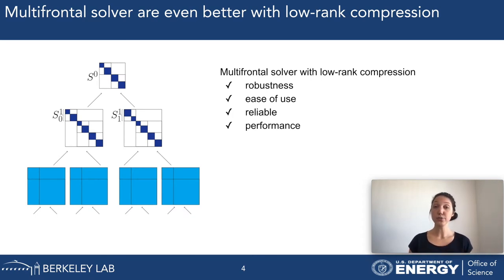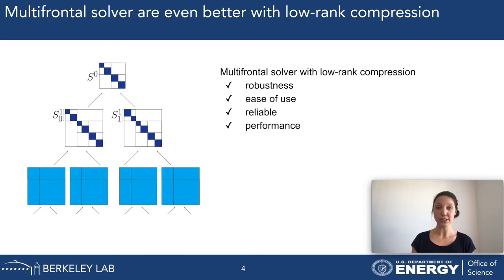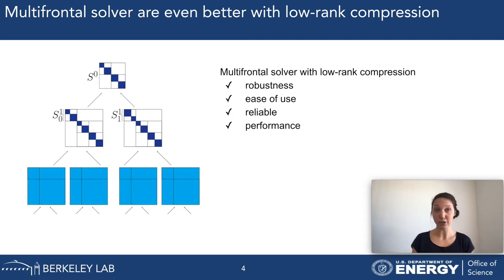Lower in the tree, closer to the leaves, we will keep the dense matrices, because they are smaller and it doesn't pay off to compress them. Compression means we partition these frontal matrices into blocks, and some of these blocks will be represented by a factorization—a product of two or multiple smaller matrices—instead of keeping the entire block as a dense block.